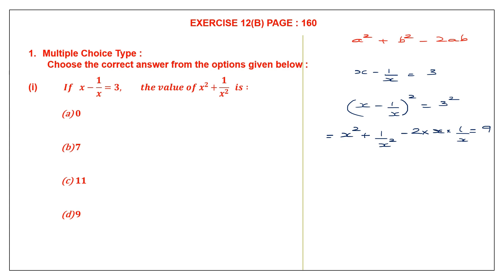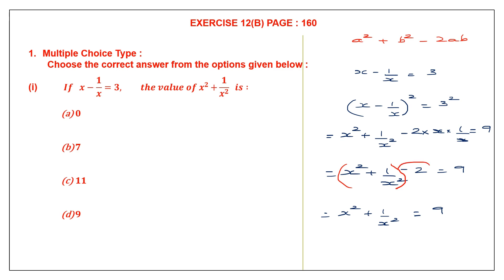We can cancel x in the 2ab term, so we have x squared plus 1 by x squared minus 2 equals 9. We need to find x squared plus 1 by x squared, so we transpose minus 2 to the other side — it becomes plus 2. Therefore x squared plus 1 by x squared equals 9 plus 2, which is 11.